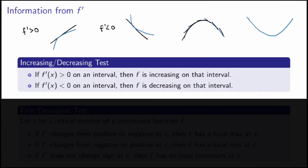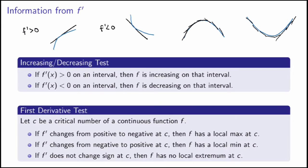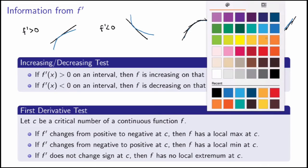Similarly, at a local min we get the opposite behavior: the derivative is negative on the left, goes to zero, then becomes positive on the other side. This gives us the first derivative test: if f prime changes from positive to negative at a critical number c, then f has a local max at c; if it changes from negative to positive, f has a local min.